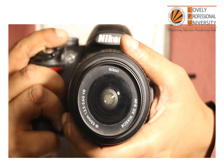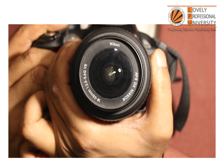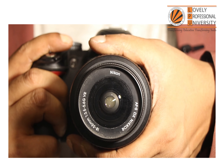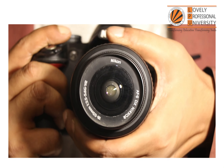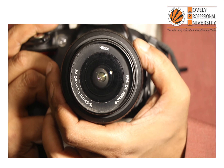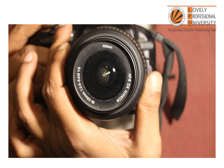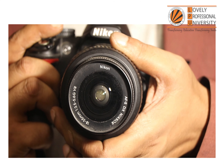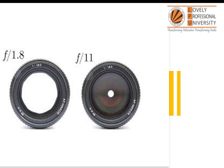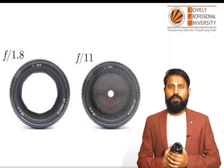Now let me explain aperture in the lens and how we use it. You can see the changes in the lens. When our f-stop increases, it means it is allowing more amount of light to enter. This is aperture.